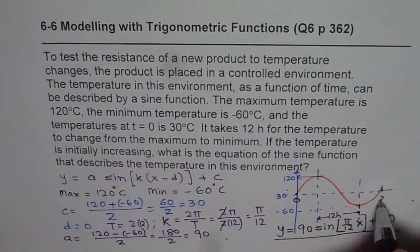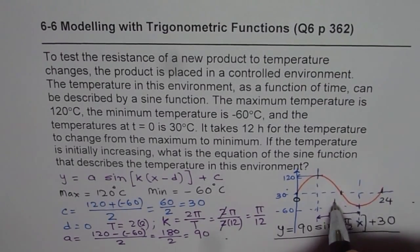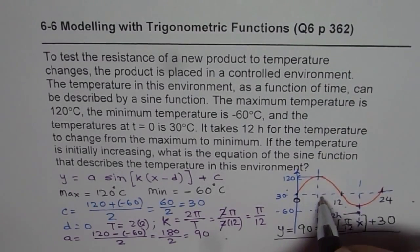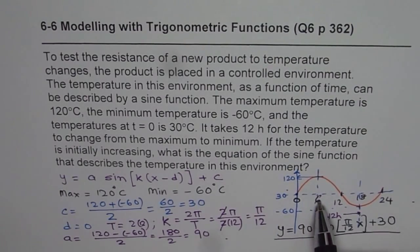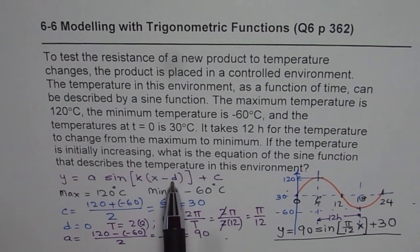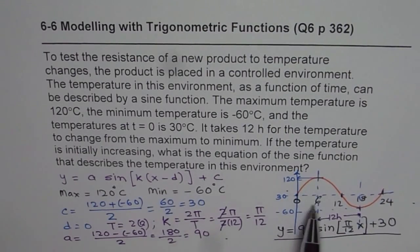It is 6 and 18. So there is a phase shift by 6 to the right. We will have d as 6 for the cosine function. That would be the only change. The rest of the things will remain the same.